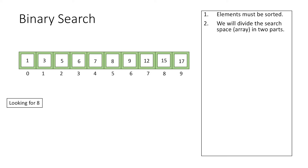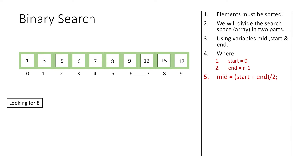We divide the search space — the array — into two parts using the variables mid, start, and end. We initialize start as 0 and end as n-1, where n is the number of elements in the array, storing the first index in start and the last index in end. We then calculate the middle index as (start + end) / 2 and store it in mid, then check the element at that middle index.